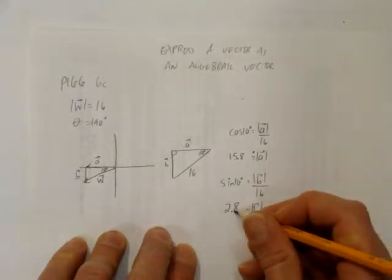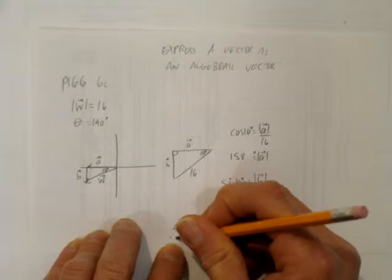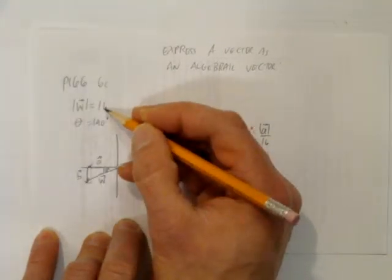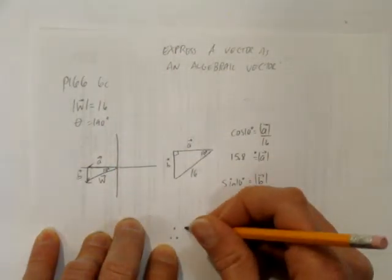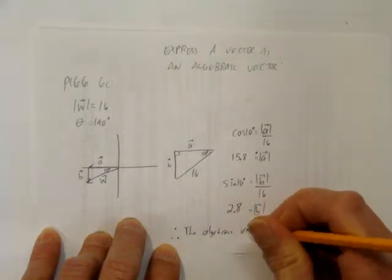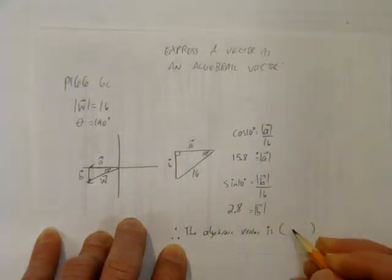So we've got our two numbers. Therefore, we can express this w vector, which had a magnitude of 16 at a rotation of 190. The algebraic vector is 2 numbers as a point.